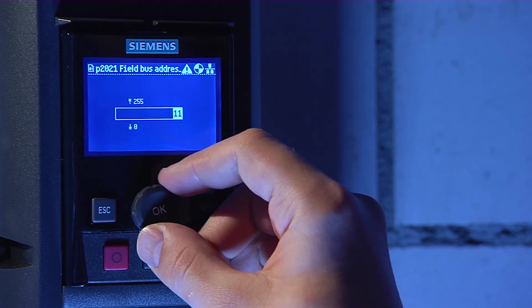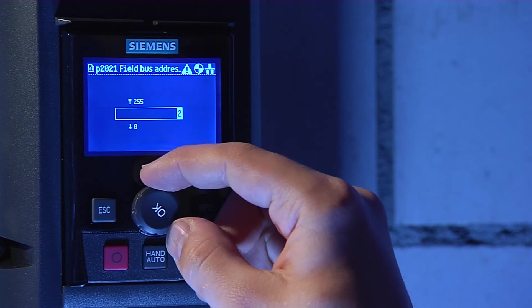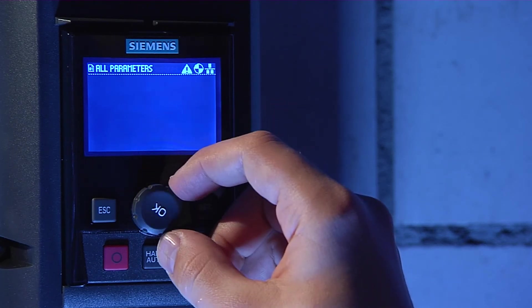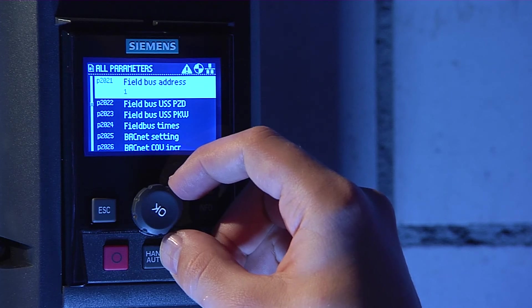Press OK to enter the parameter setting and then select a Modbus address. Zero is an invalid Modbus address. All other Modbus addresses can be used, but please make sure that every drive has a unique ID.